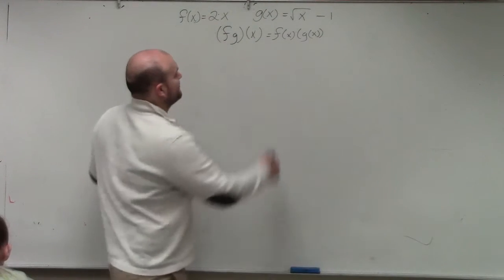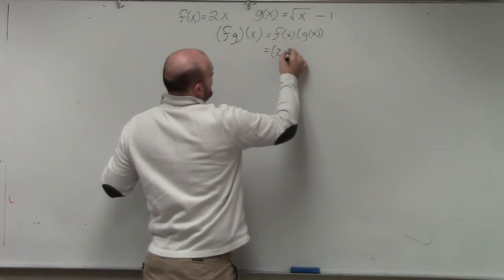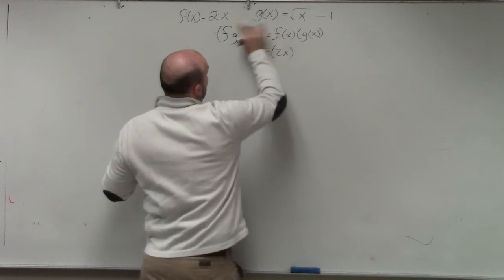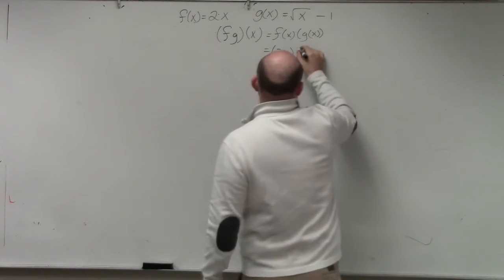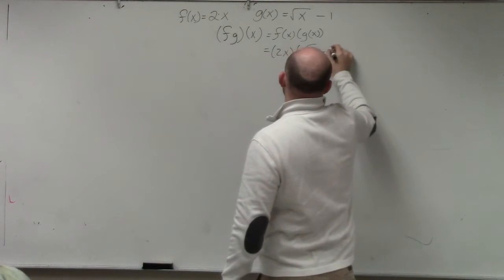So we say, what is f of x? f of x is 2x. And what is g of x? g of x is the square root of x minus 1.